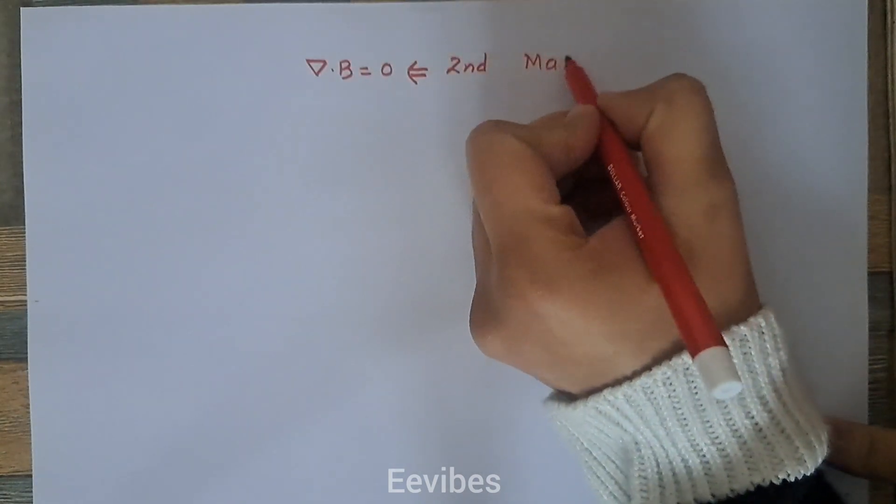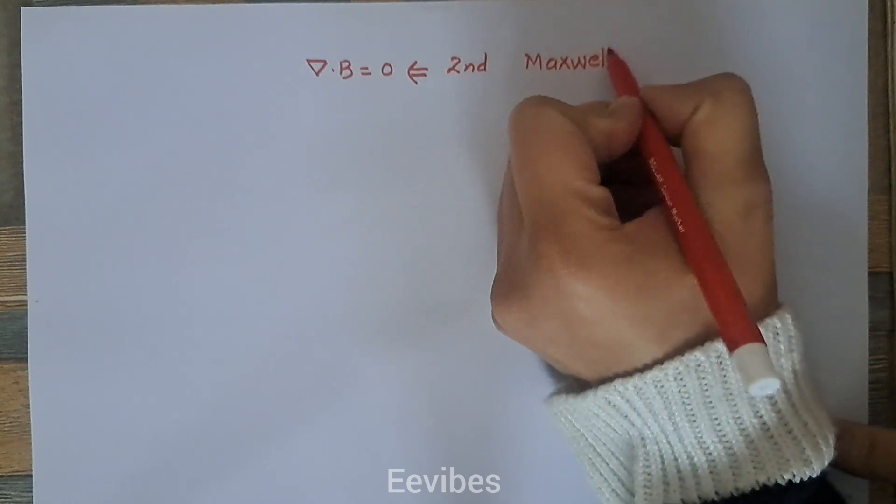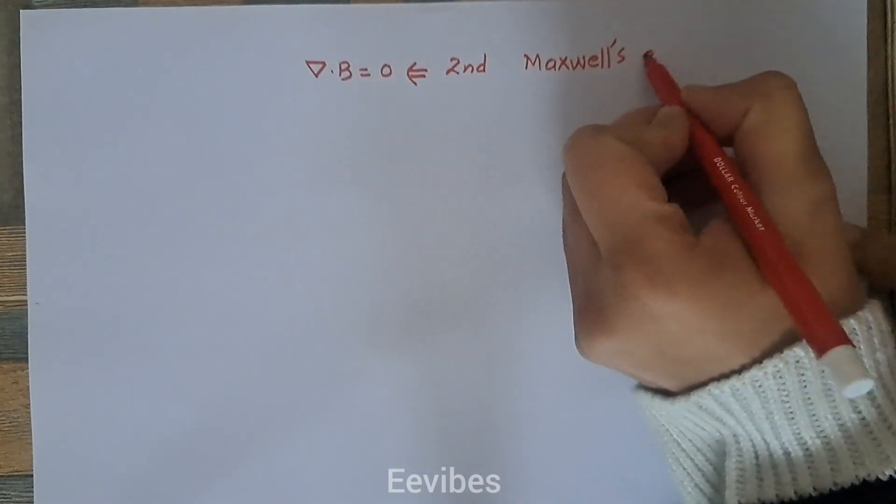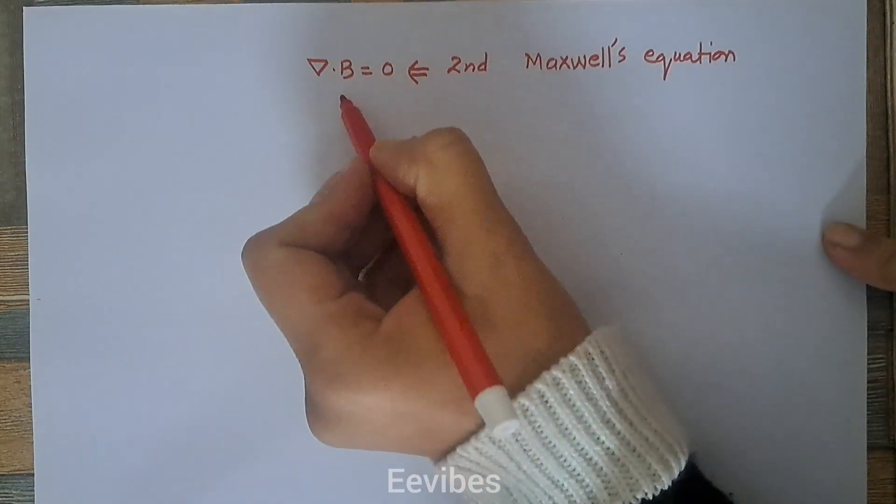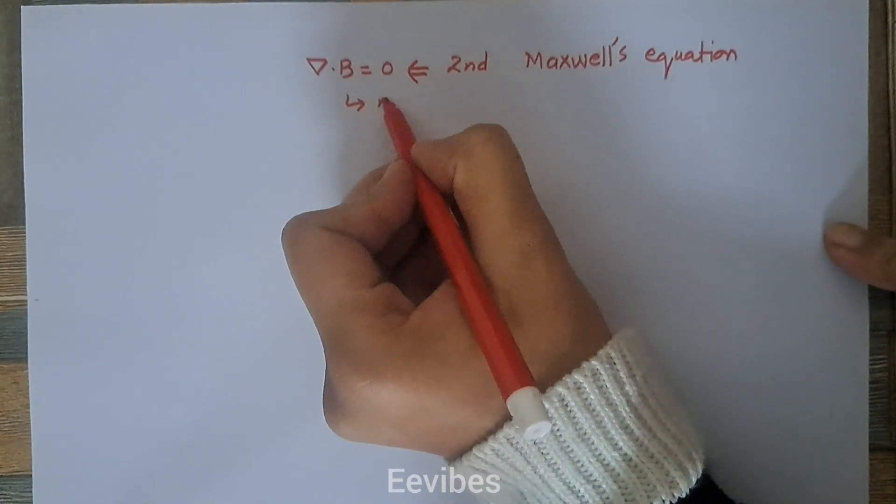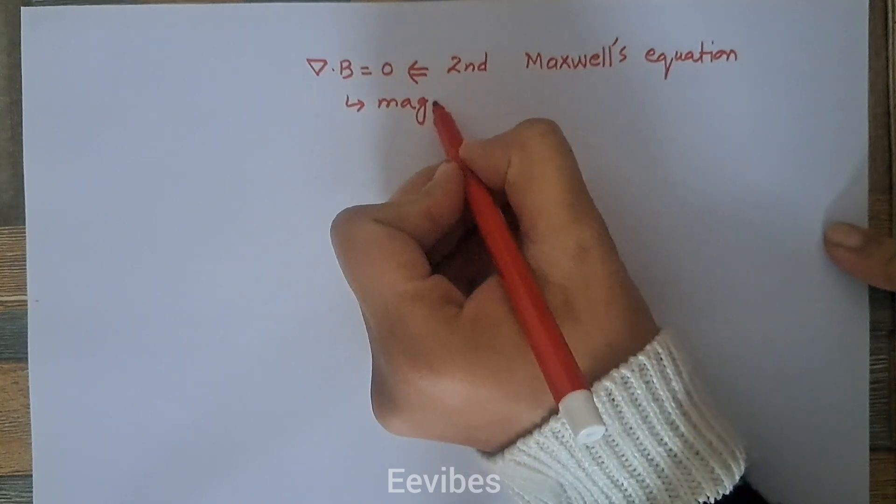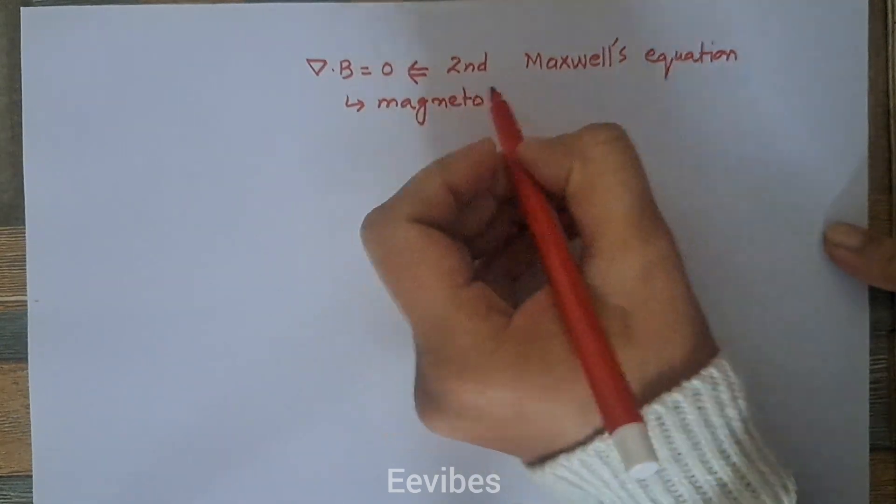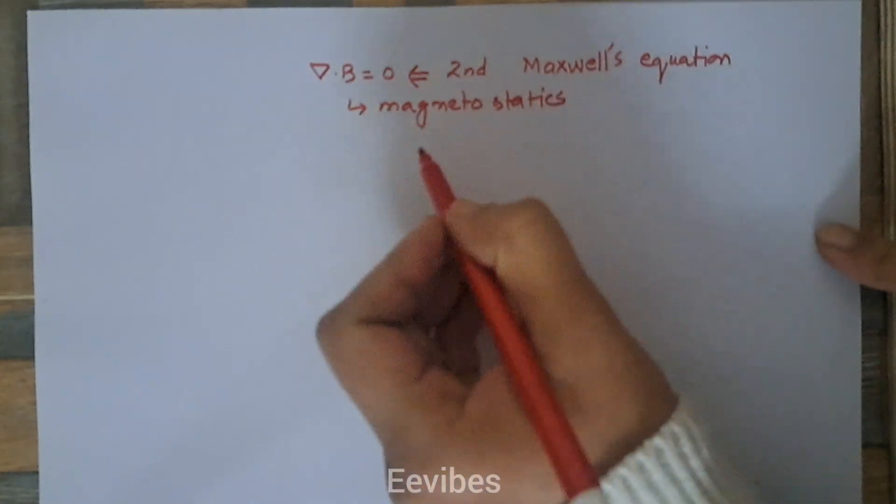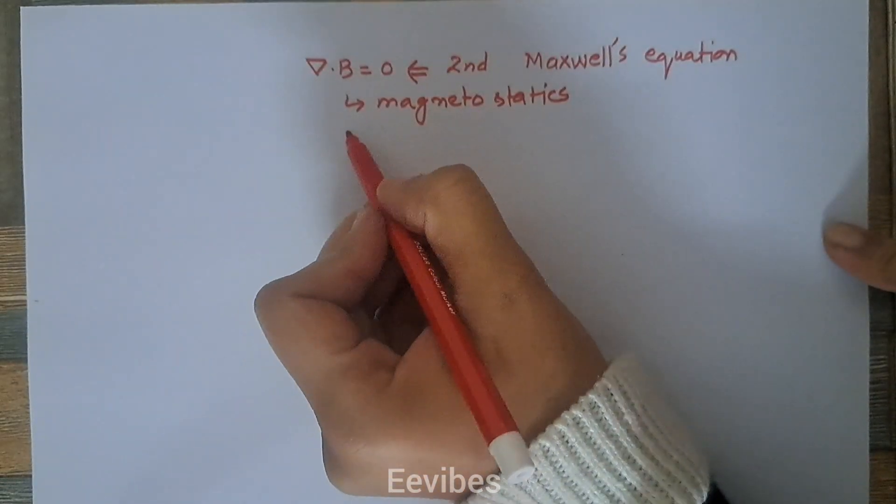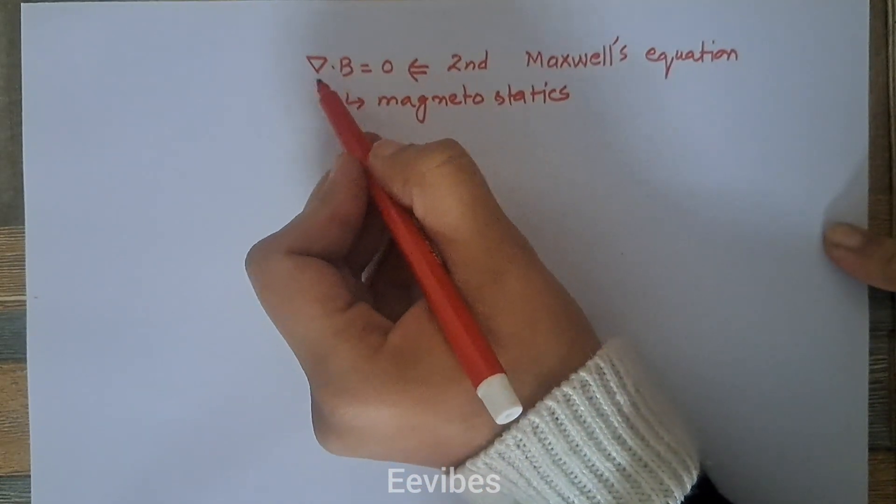We write this equation in the form for magnetostatics. First of all, you must always remember that this equation is associated with magnetostatics.